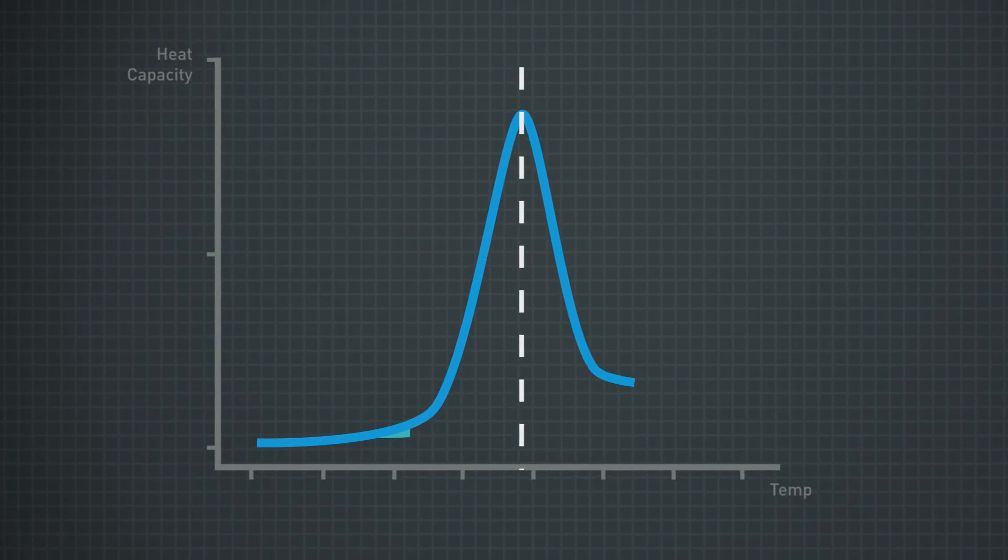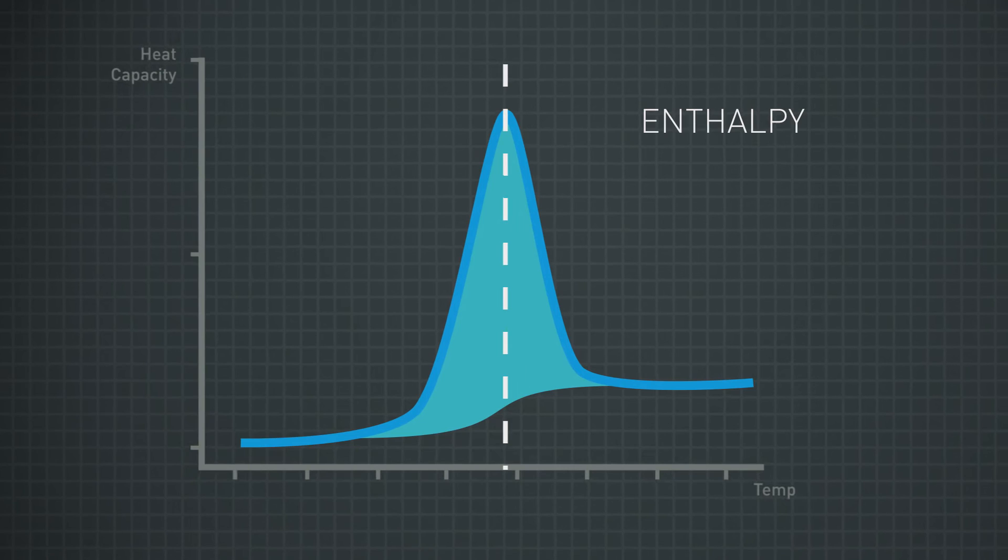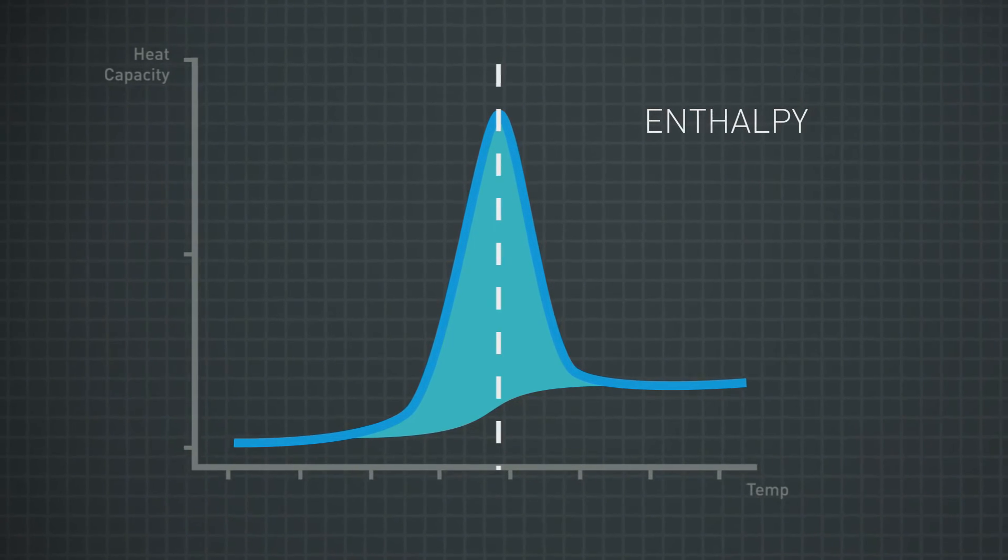DSC also measures enthalpy, a measure of the energy needed to break the non-covalent bonds which keep the protein folded.